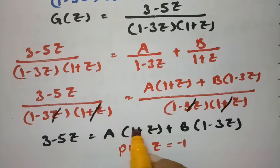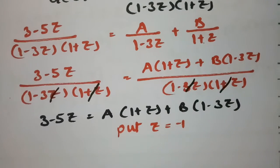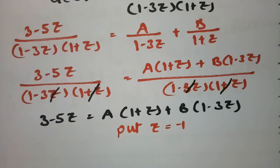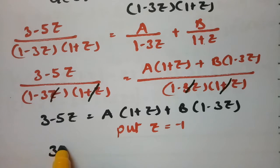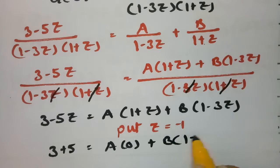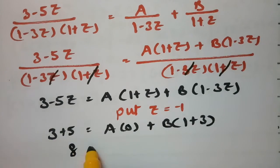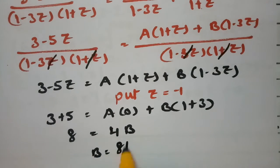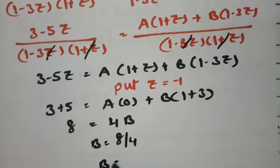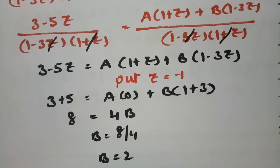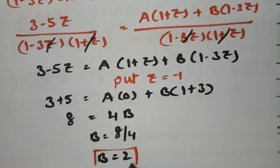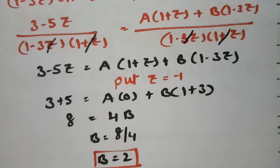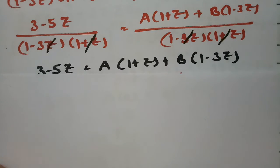To find B, put z equal to minus 1: 3 plus 5 equals 4B, so 8 equals 4B, giving B equals 2.